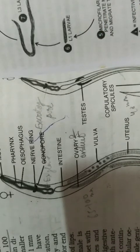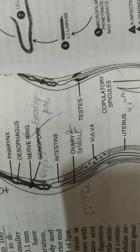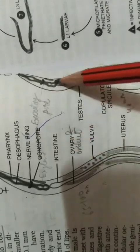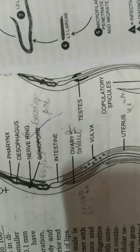Coming to the life cycle: Wuchereria bancrofti is a digenetic parasite, meaning it completes its life cycle in two hosts. In Ancylostoma it was monogenetic — completing its life cycle in only one host, which was man. But here there are two hosts. The primary host is man, where sexual reproduction takes place: male and female undergo copulation, producing eggs which undergo fertilization.